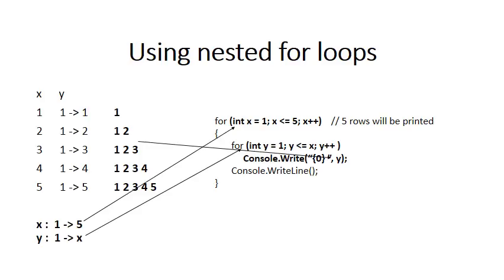Summarizing: X goes from one to five, and Y goes from one to X. This directly maps to our nested for loops. The outer for loop has X starting at one, stopping at five. The inner for loop has Y going from one to X. In the diagram we're printing the actual numbers 1, 2, 3, etc., which are the values of Y each time. So in the console.Write we now print the value of Y instead of a star.